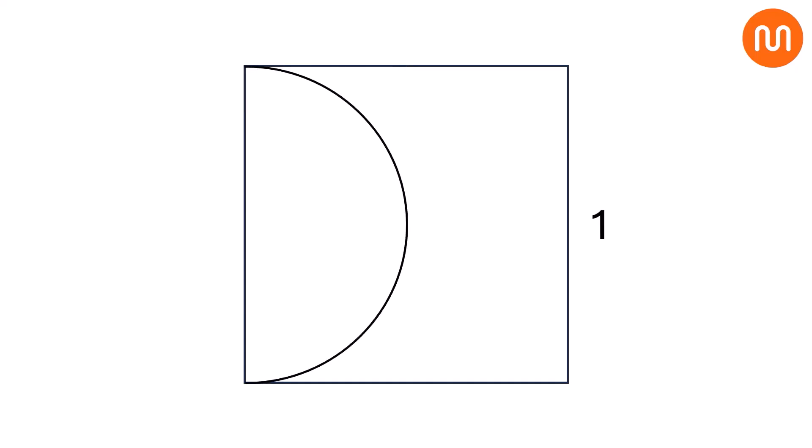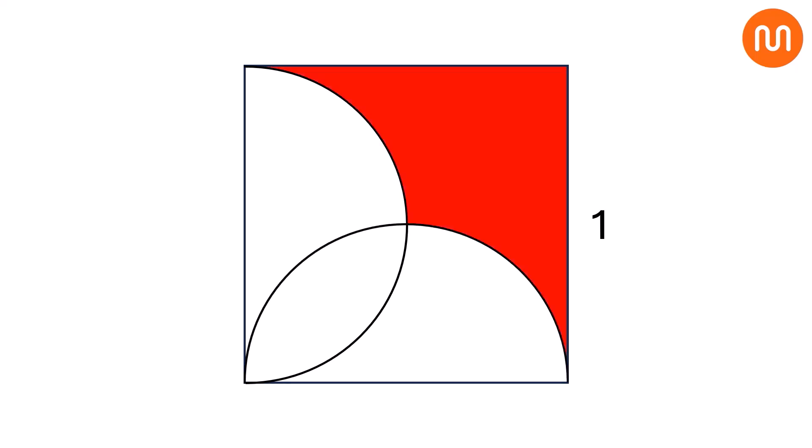Now, two semicircles are drawn on adjacent sides of the square. The question is, can you solve for the red area?